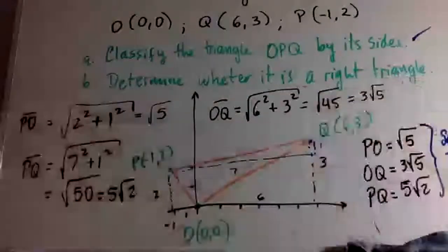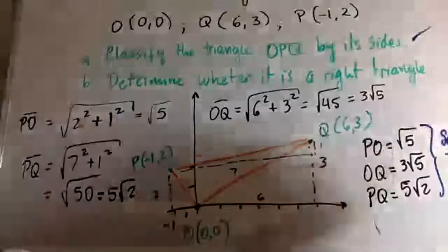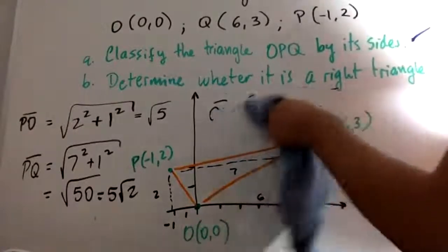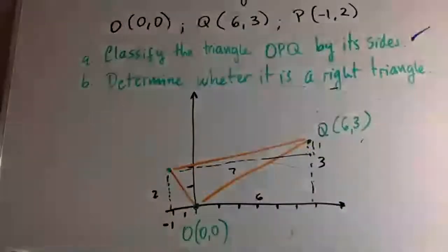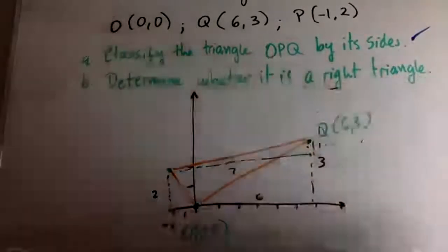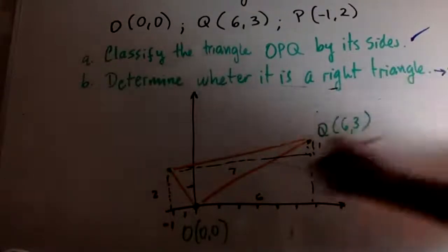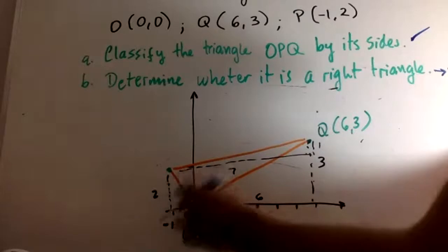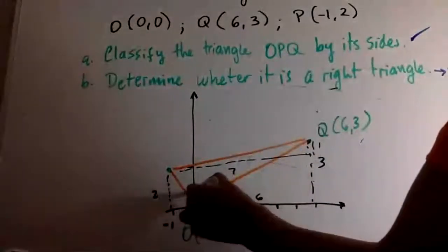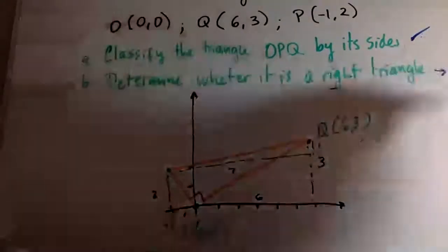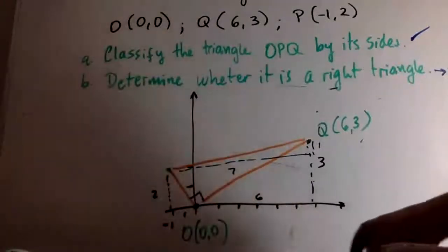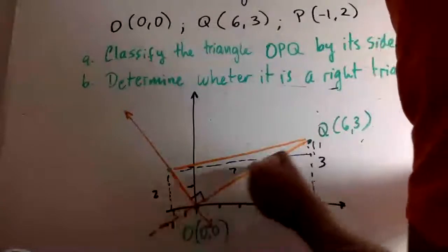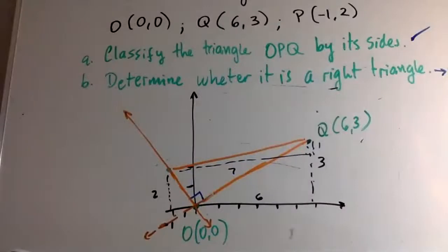Now for part B — we need to determine whether it is a right triangle. A right triangle needs a 90-degree interior angle. Looking at the figure, maybe angle O looks like a right angle. To confirm this, we need to check if the two sides meeting at O are perpendicular.